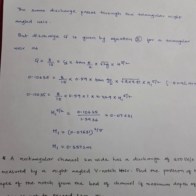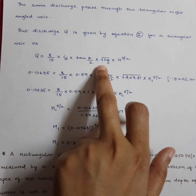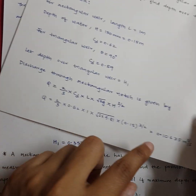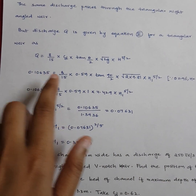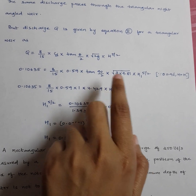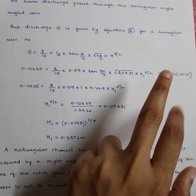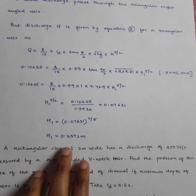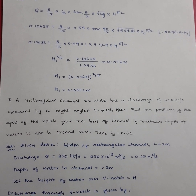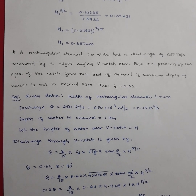For the triangular notch: Q = (8/15)·CD·tan(theta/2)·root(2g)·H1^(5/2). Substituting Q = 0.10635, CD = 0.59, tan(45°) = 1, and g = 9.81, then solving for H1 gives H1 = 0.3572 m. When flow passes from one notch to another, the discharge of the first notch equals the discharge of the second notch.